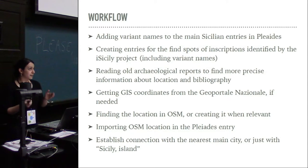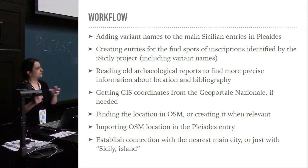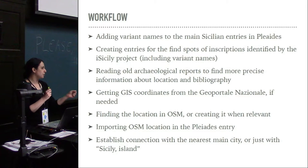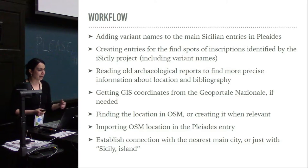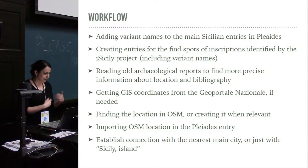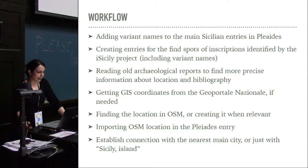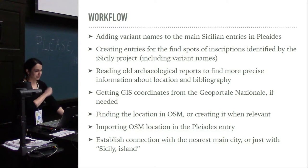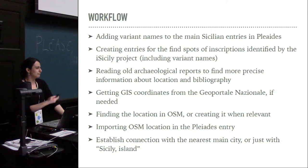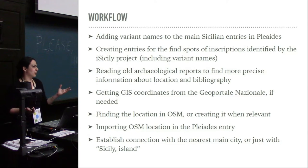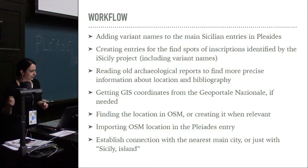The workflow for Sicily was to look for existing entries for the main Sicilian sites and when possible enhance the location, because what Pleiades did for Sicily many times was make the ancient place coincide with the modern place, which sometimes was not very correct. When we had more precise data we corrected the location. For places not already in Pleiades, we created an independent entry adding all the variant names, found the place on old maps, used the Geoportale Nazionale, and created the location in OpenStreetMap when relevant — I tried to be sensible about that, using OpenStreetMap only when the information was actually useful for the public.